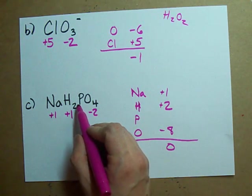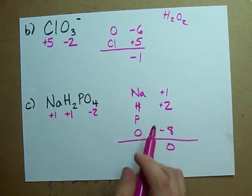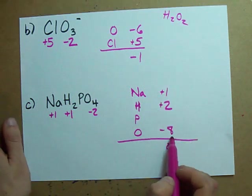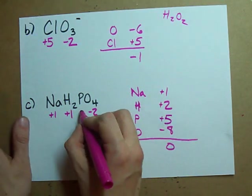What charge does phosphorus want in order for the charges to add up to zero? Well I got one and two and minus eight. That total is minus five. So this has to be plus five to cancel that out.